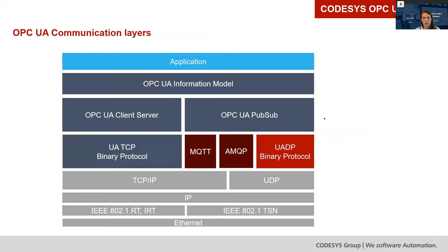What you see here is the seven-layer OSI model, typically presented for communication protocols. Below the physical layer, above that comes the IEEE 802 with RT and IRT standards, or the now newly arising TSN. And above that the IP protocol and above that the TCP/IP communication and UDP communication.